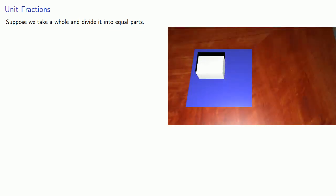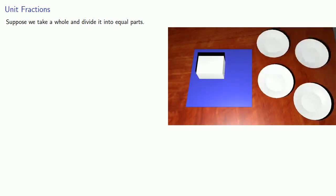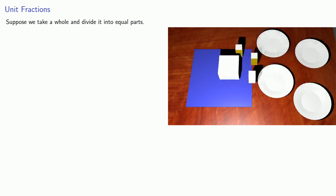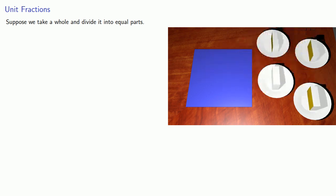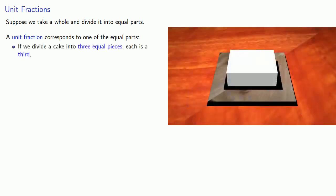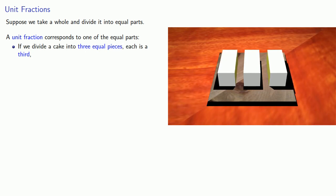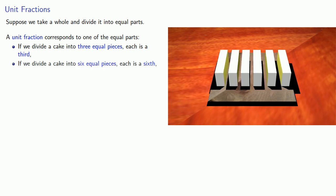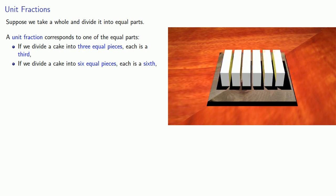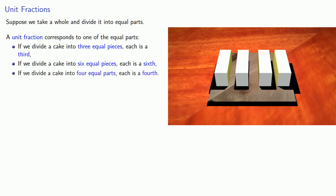A unit fraction emerges as follows: suppose we take a whole object and divide it into equal parts. For example, we can take a cake and divide it into four equal parts. A unit fraction corresponds to one of those equal parts. So if we divide a cake into three equal pieces, each of these pieces is a third. Or we could divide the cake into six equal pieces, each of which is a sixth. Or we could divide the cake into four equal parts, each of which is a fourth.